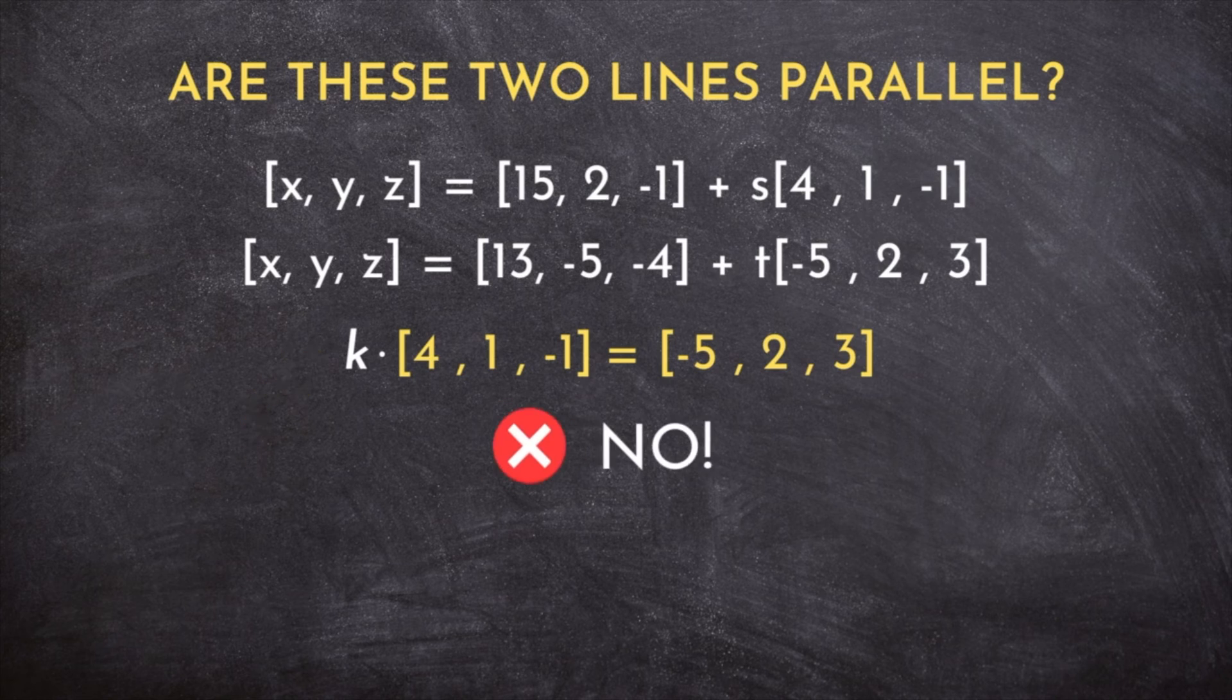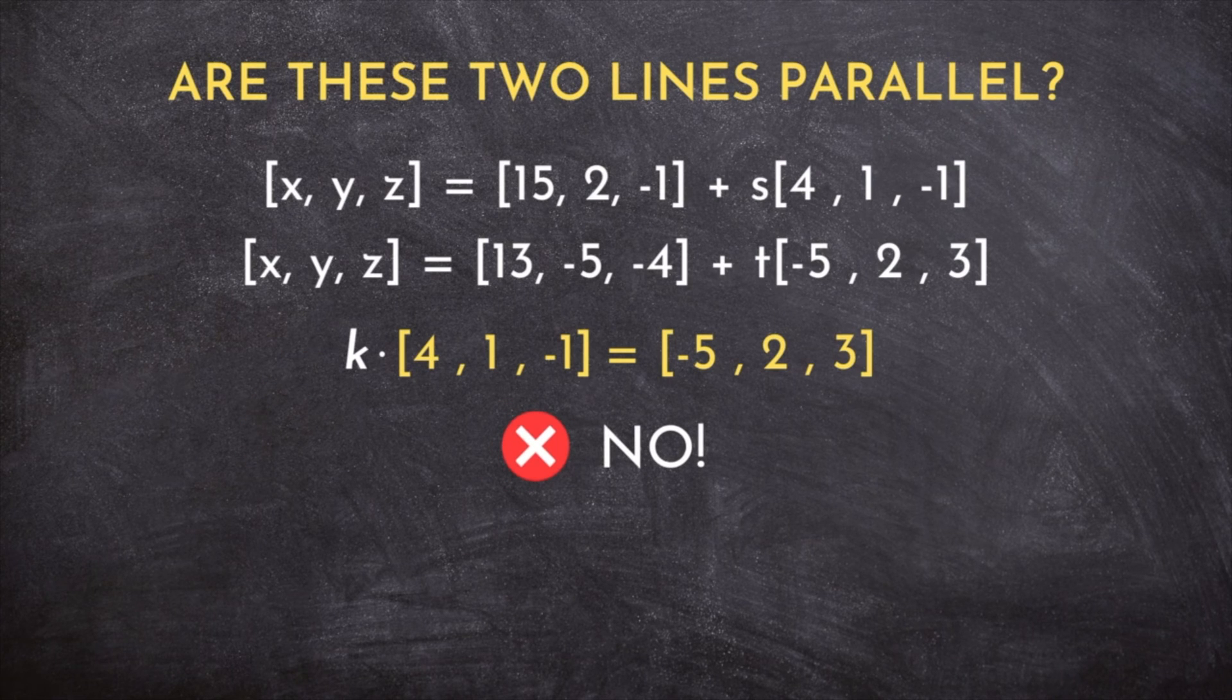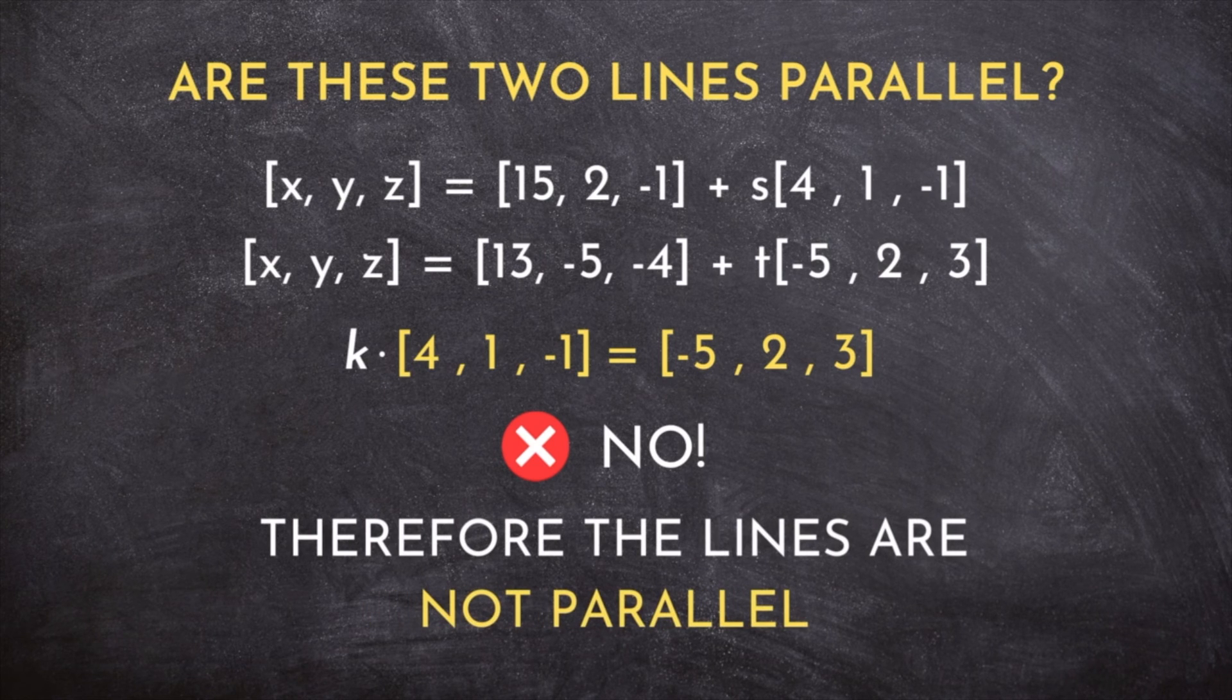In this case, no such k exists. No matter what I multiply this direction vector on the left by, I won't be able to produce the direction vector on the right. So these two lines can't be parallel.